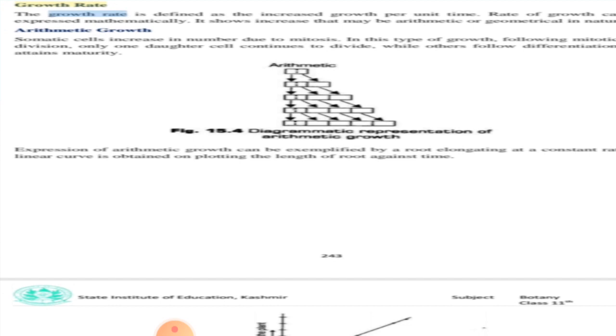What is arithmetic growth? It is a type of growth in which the rate of growth is constant. Increase in growth occurs in arithmetic progression, that is 2, 4, 6, 8, 10, 12. Arithmetic growth is found in root or shoot elongating at constant rates. Meristematic cells at the growing point divide in such a fashion that one daughter cell remains meristematic while the other grows and differentiates.